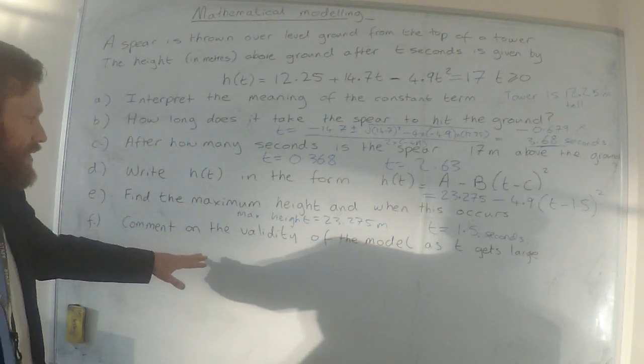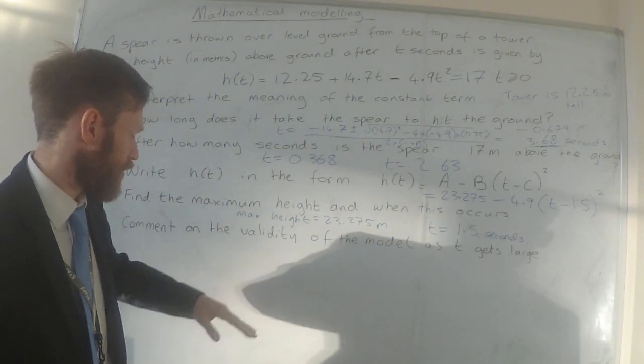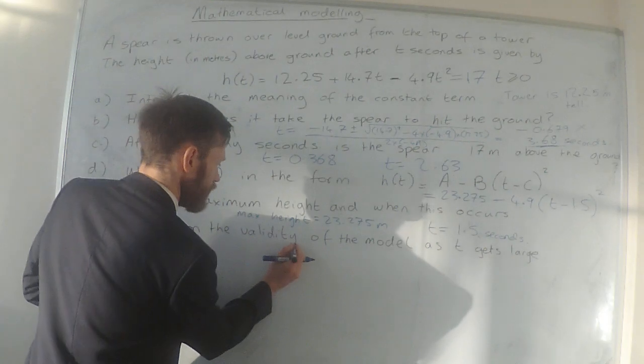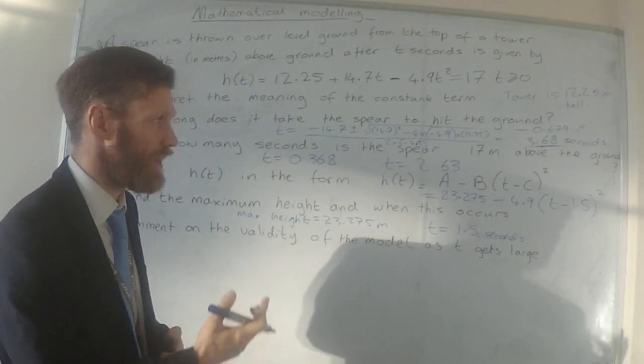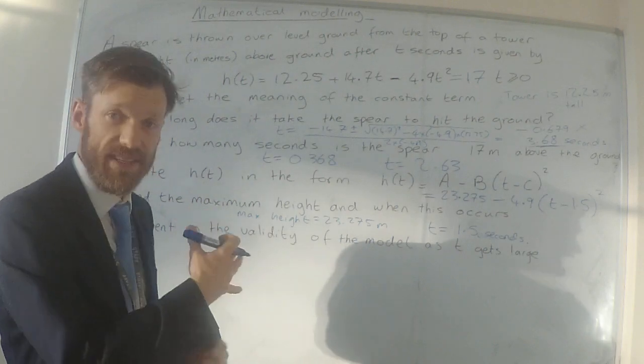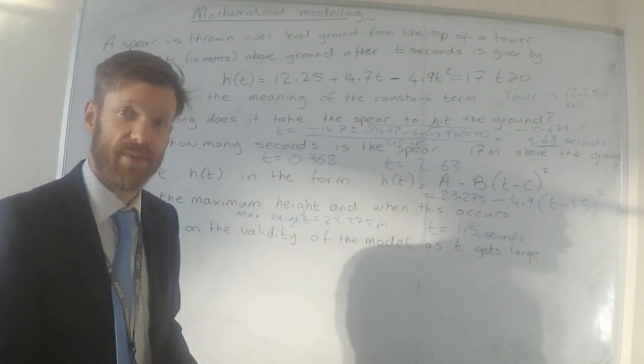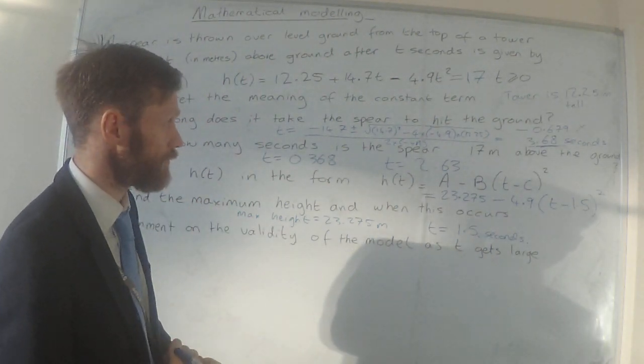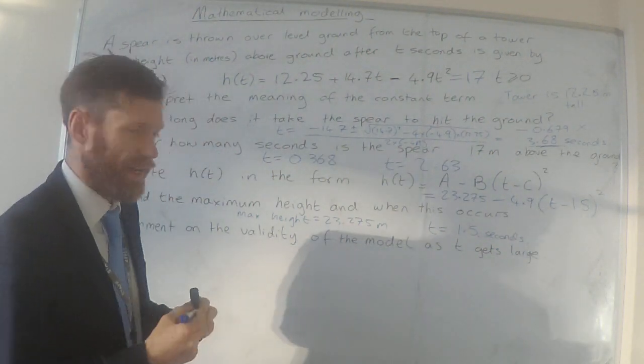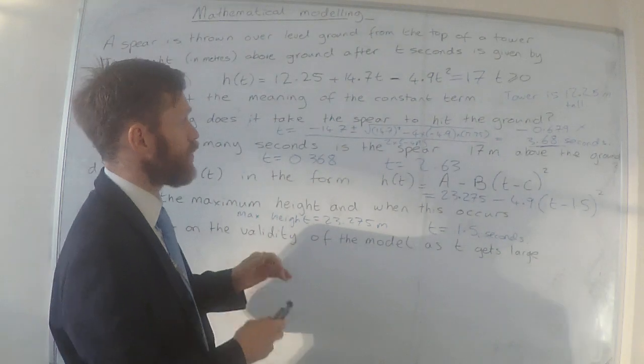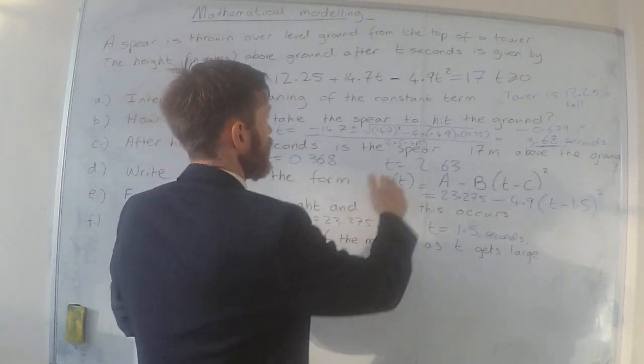And finally, comment on the validity. Comment on the validity of the model if t gets large. So after a long period of time, is this model still going to be valid? Well, let's think. After a long period of time, what's going to be happening to my original equation?